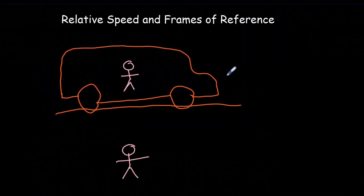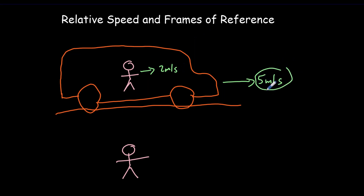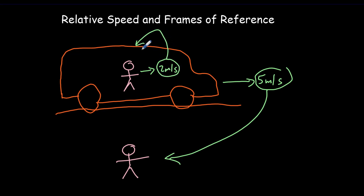Suppose we've got a bus moving forward at 5 meters per second, and there's a person on the bus walking towards the front at 2 meters per second. When we give these speeds of 5 and 2, we haven't mentioned with respect to what. The 5 meters per second is with respect to the ground, whereas the 2 meters per second is with respect to the bus.